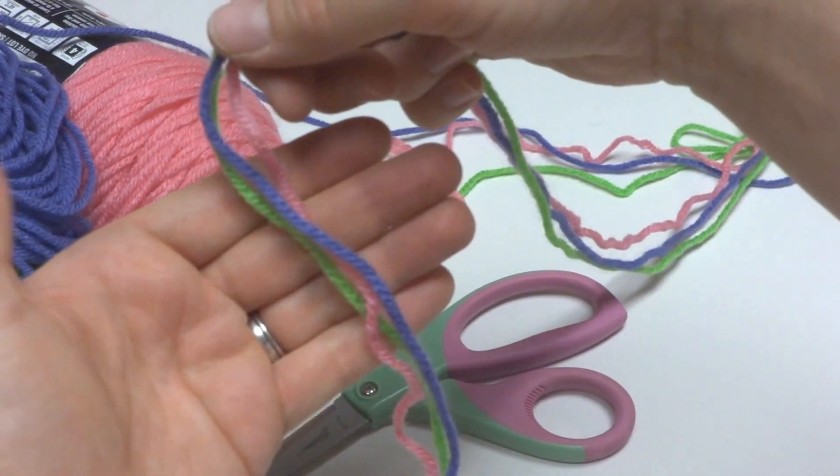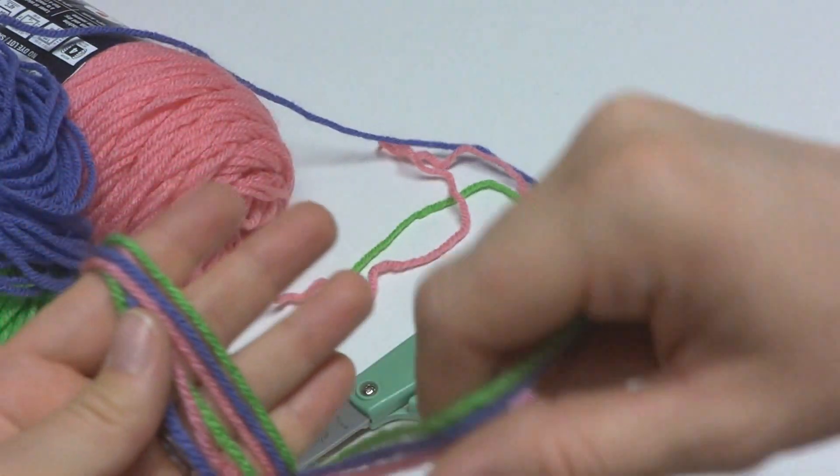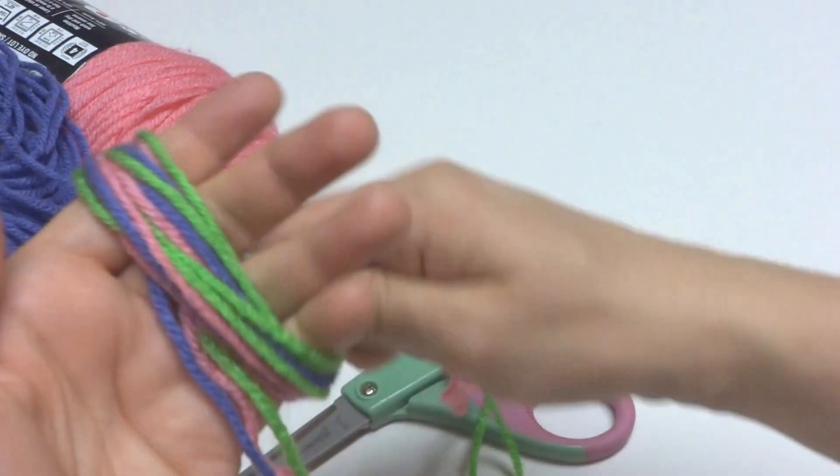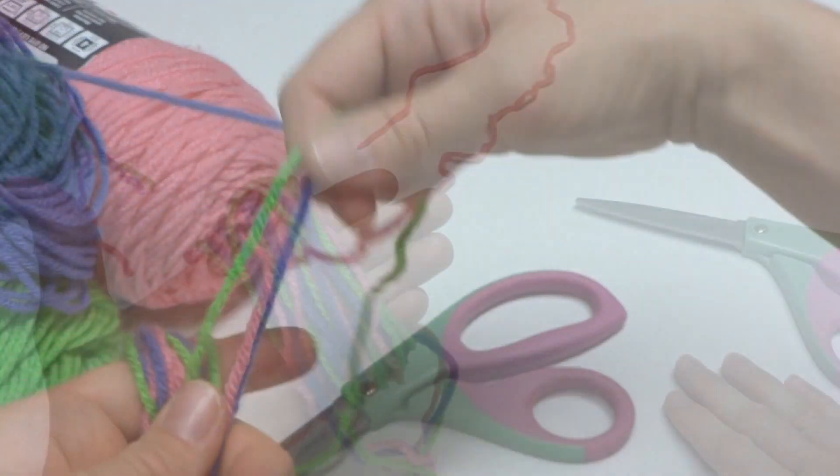So just hold the yarn in your hand and you're just going to begin wrapping the yarn around your fingers. You're just going to keep wrapping until you have a nice, thick bundle in your hand. So I'm going to wrap some yarn and rejoin you in just a moment.